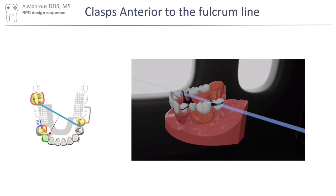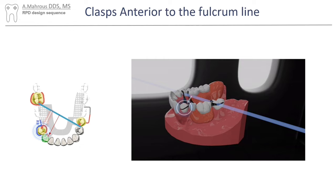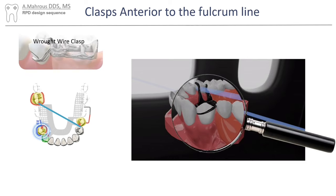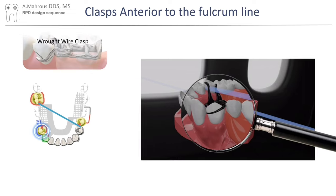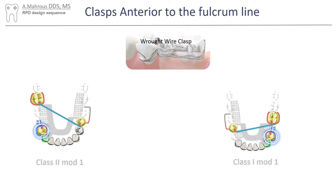Firstly, cases with clasps anterior to the fulcrum line — like this case with the Kennedy Class 2 Mod 1. As you might notice, the clasp assembly on tooth number 28 exists entirely anterior to the fulcrum line. Because of this, the whole clasp assembly tends to lift off the tooth when pressure is applied on the edentulous segment. Therefore, the best clasps to be placed in this area to ensure proper stress breaking are wrought wire clasps, due to their flexibility compared to other cast clasps. Similar situations will also occur anytime a modification space exists anterior to the fulcrum line, as is the case with many Class 1 and Class 2 cases.